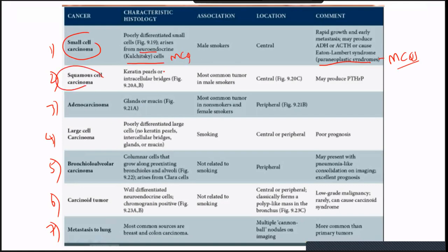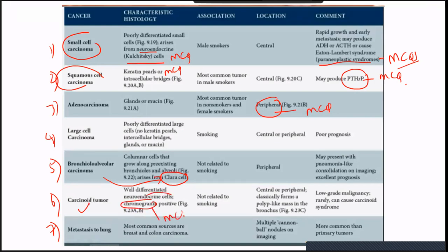Squamous cell carcinoma: keratin pearls and intercellular bridges on histology — MCQ. It can produce PTHrP causing hypercalcemia — MCQ. It is a central lung cancer and the second most common. Adenocarcinoma is a peripheral lung cancer — MCQ. Bronchoalveolar carcinoma arises from Clara cells at the junction of bronchioles and alveoli. Carcinoid tumor is a well-differentiated neuroendocrine tumor; chromogranin is positive — MCQ.